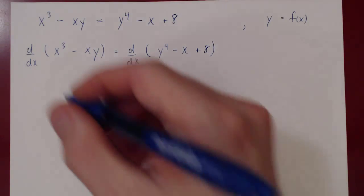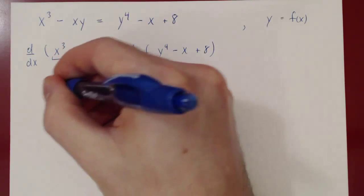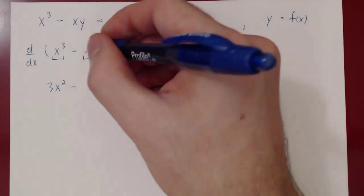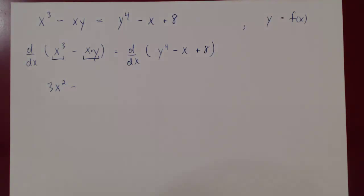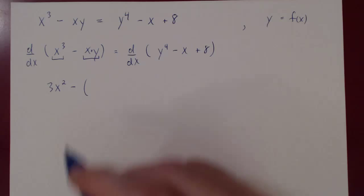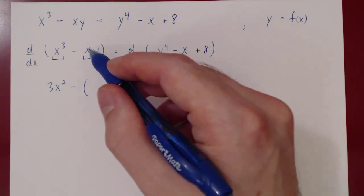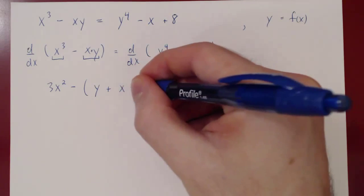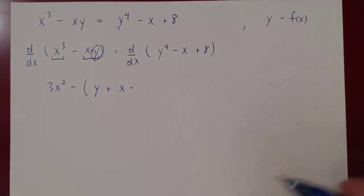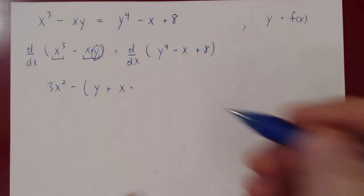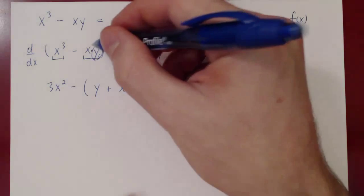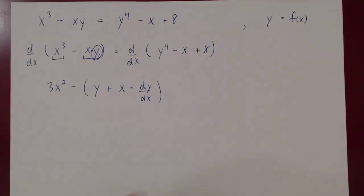The derivative of x cubed with respect to x is simply 3x squared, minus the derivative of xy. Here we have a product, so we apply the product rule. The derivative of x, which is 1, times y gives us y, plus x times the derivative of y with respect to x, which is dy/dx. This takes care of the derivative of x times y.